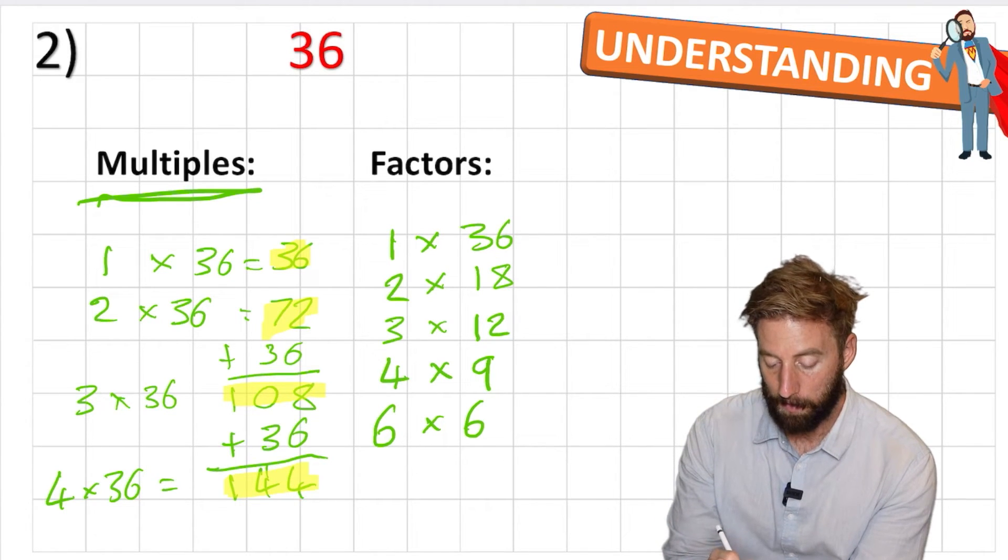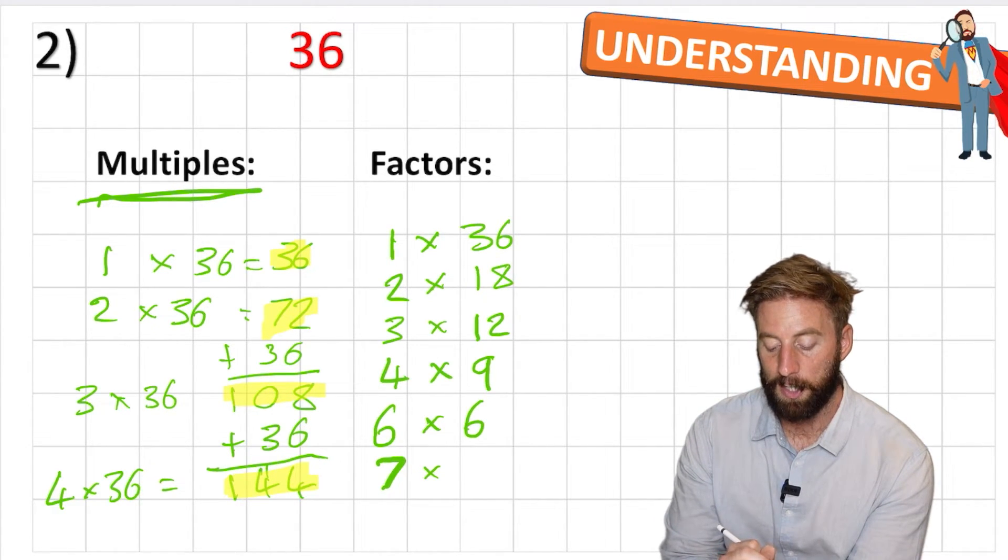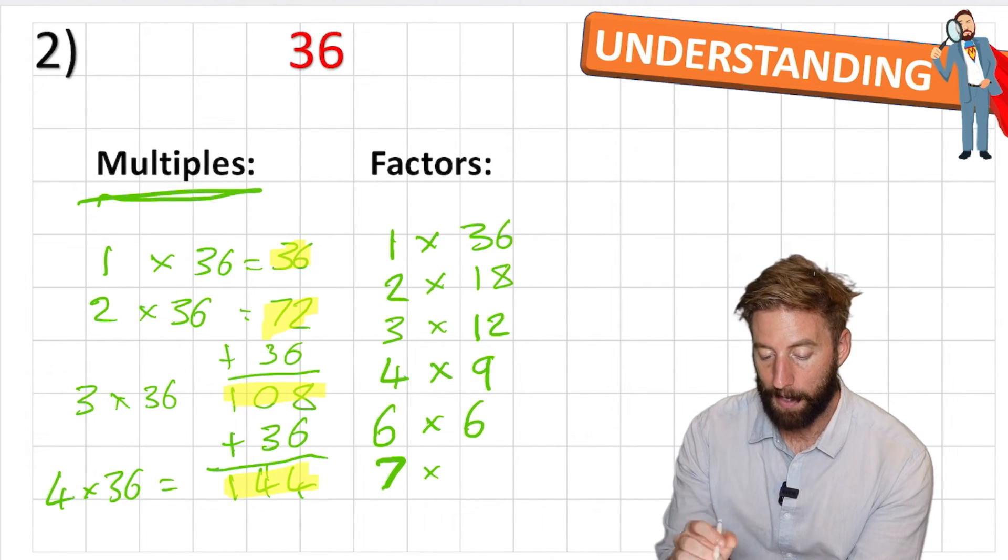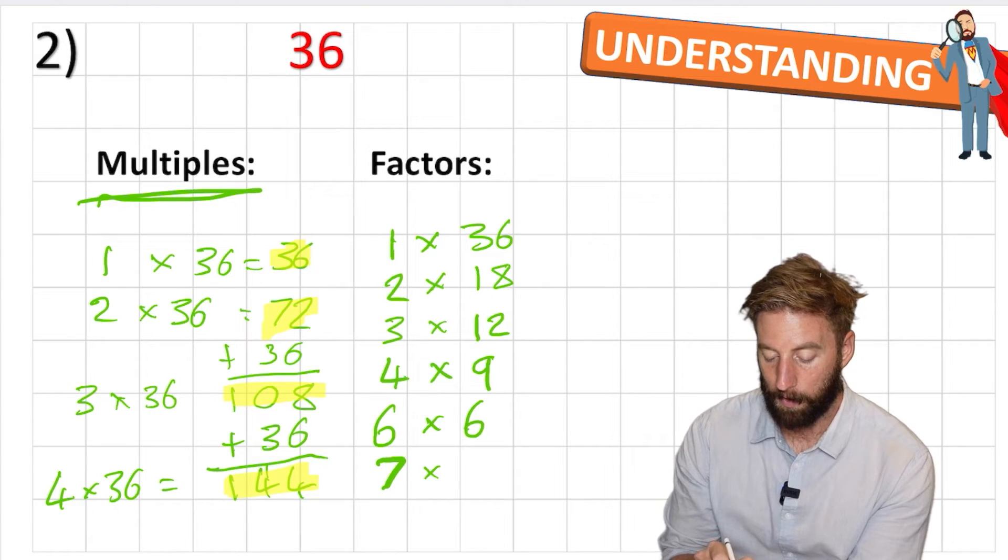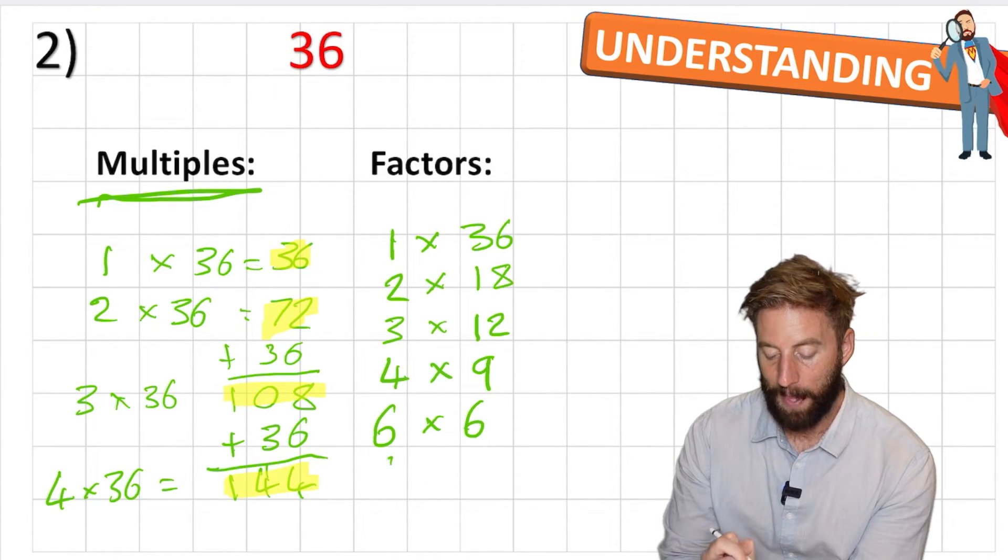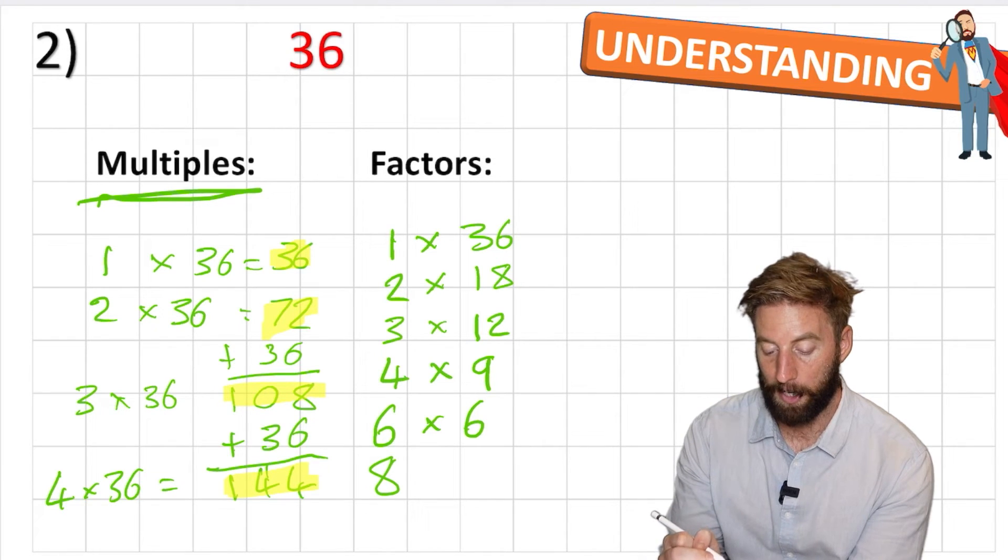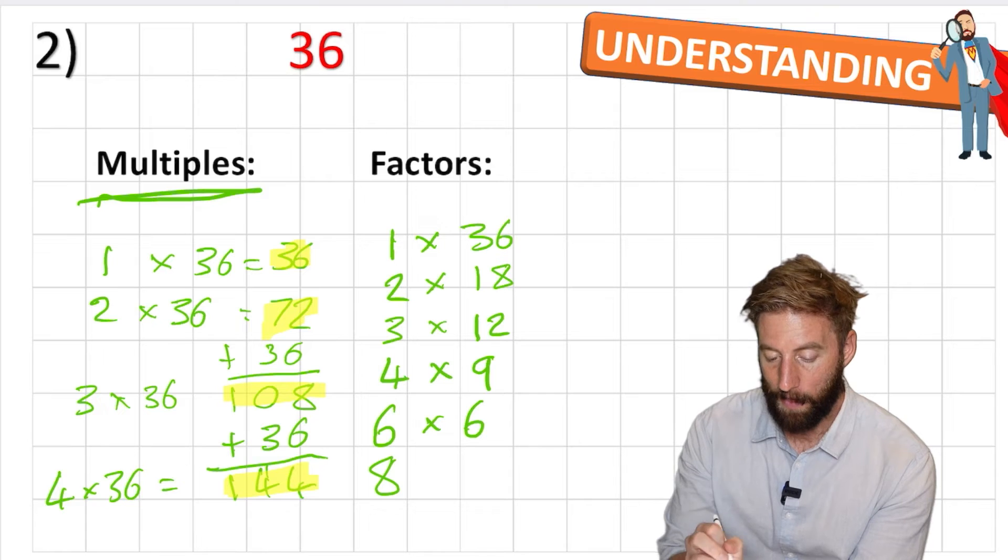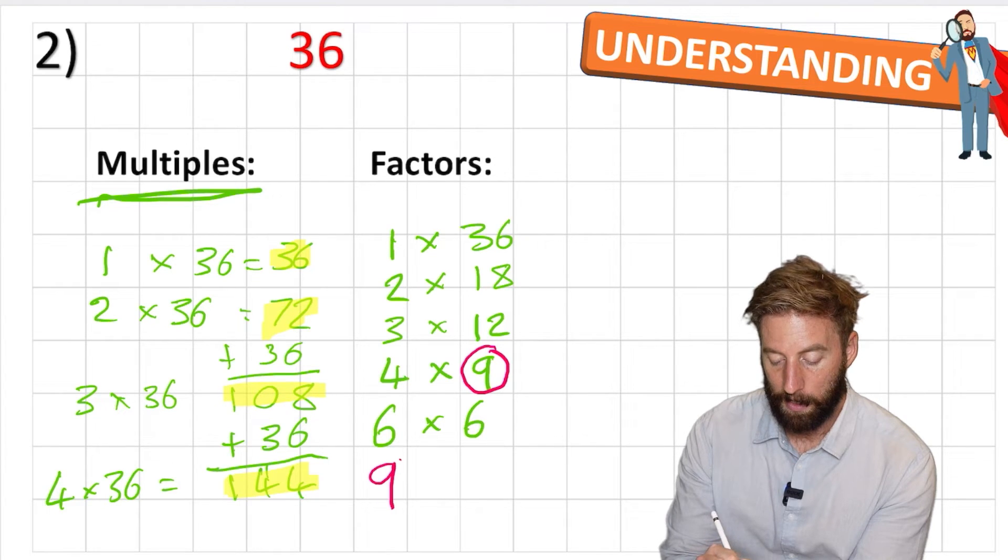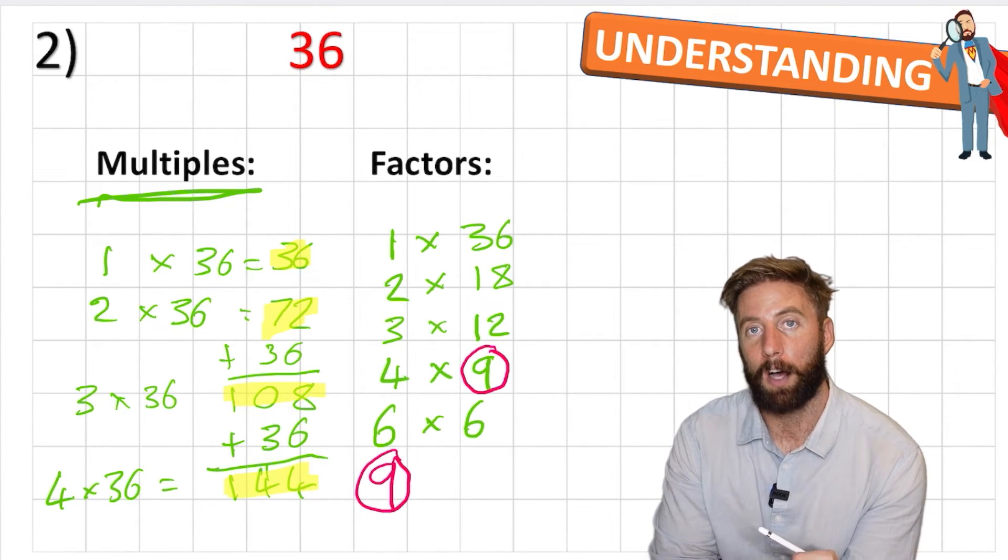Okay, let's check 7. 7 times something equals 36. 7, 14, 21, 28, 35. No, again, can't get there. So we get rid of 7. And let's check 8. 8, 16, 24, 32, 40. No, 8 doesn't work either. And therefore, my next number would be 9. But I've already got a 9. So I now know I don't need to do that one. And I've come to the end of checking my factors.